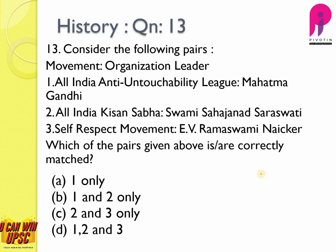Question number thirteen: match the following pairs. All India Anti-Untouchability League by Mahatma Gandhi — correct; he founded this organization in 1932 while in Yeravada prison. All India Kisan Sabha by Swami Sahjanand Saraswati — correct, established in 1936. Self-Respect Movement by E.V. Ramasami Naicker, also known as Periyar — correct; the Self-Respect Movement was started by non-Brahmins in the 1920s. The answer is D — one, two, and three.